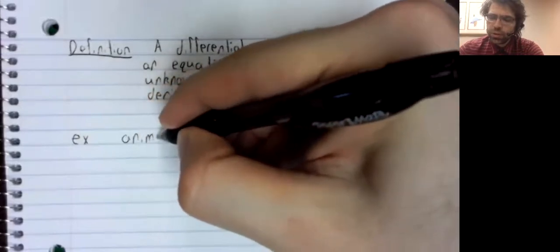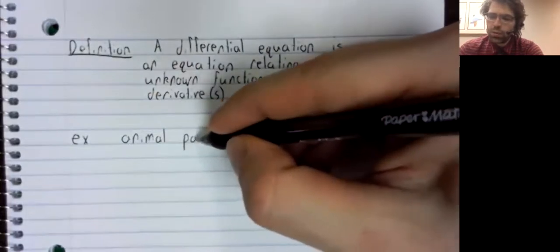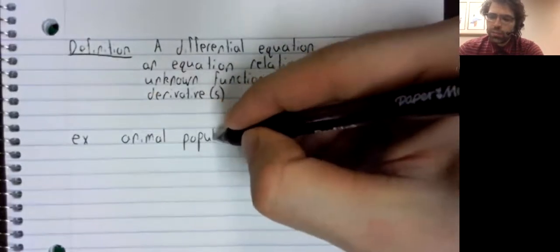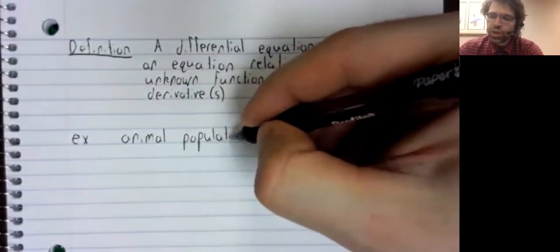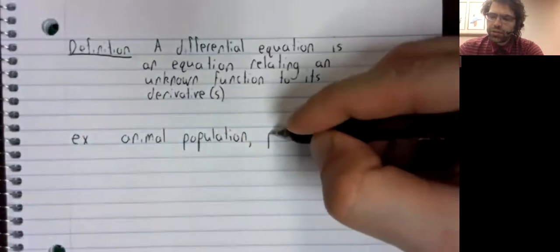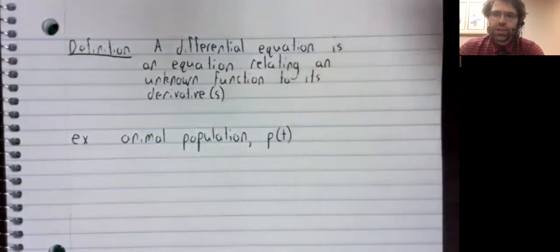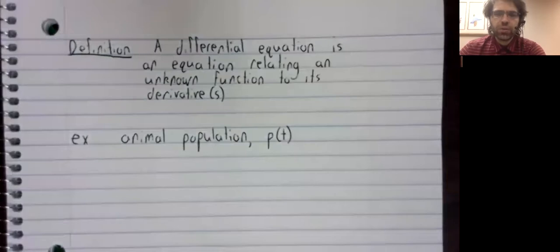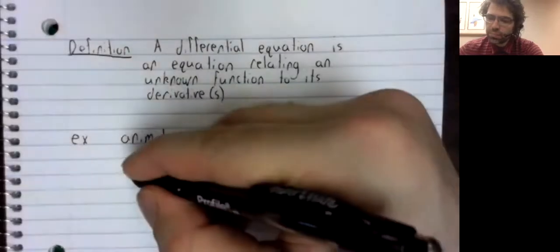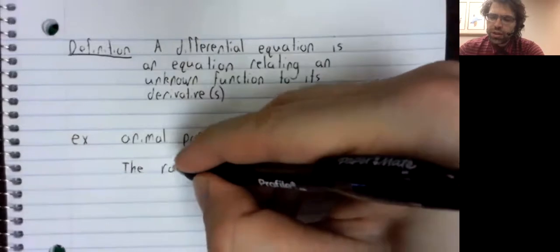say you're looking at an animal population. This animal population is changing with time, so it's a function of t.